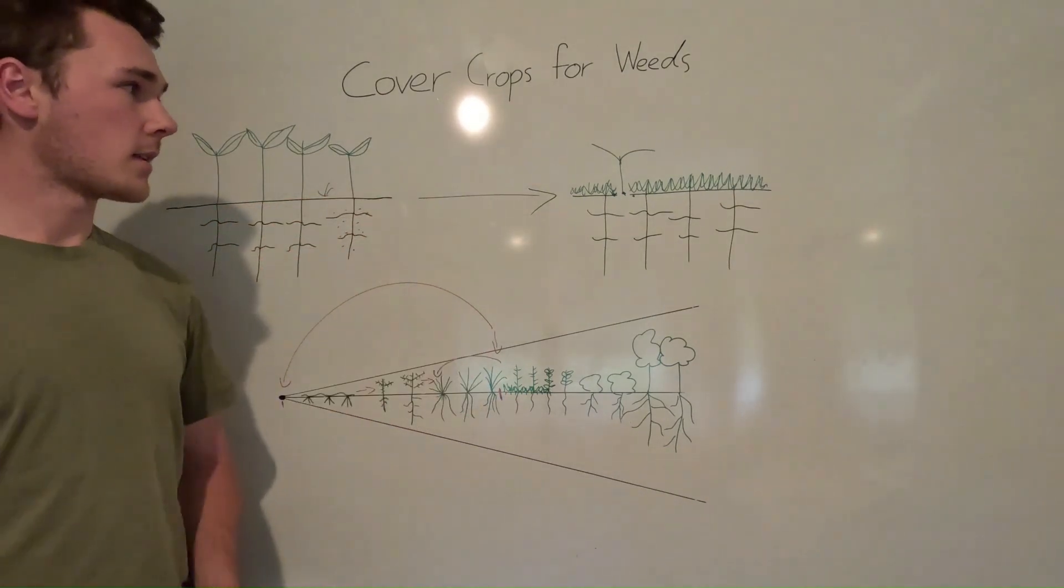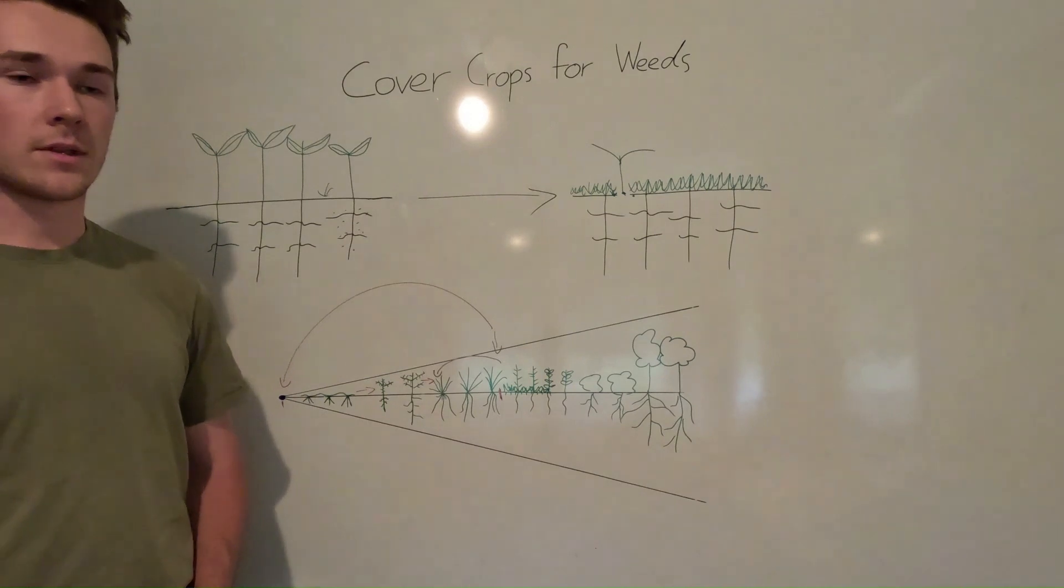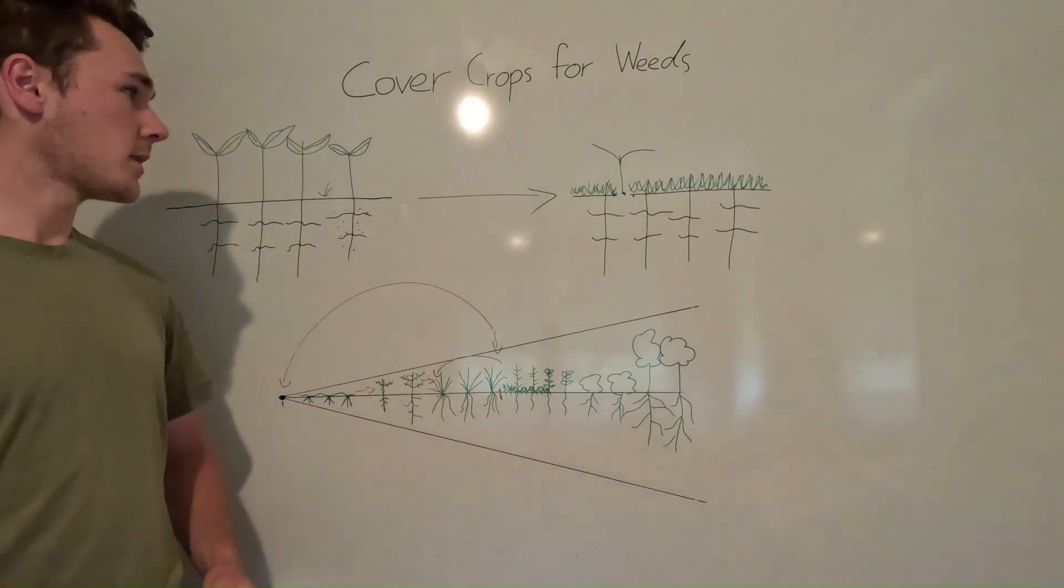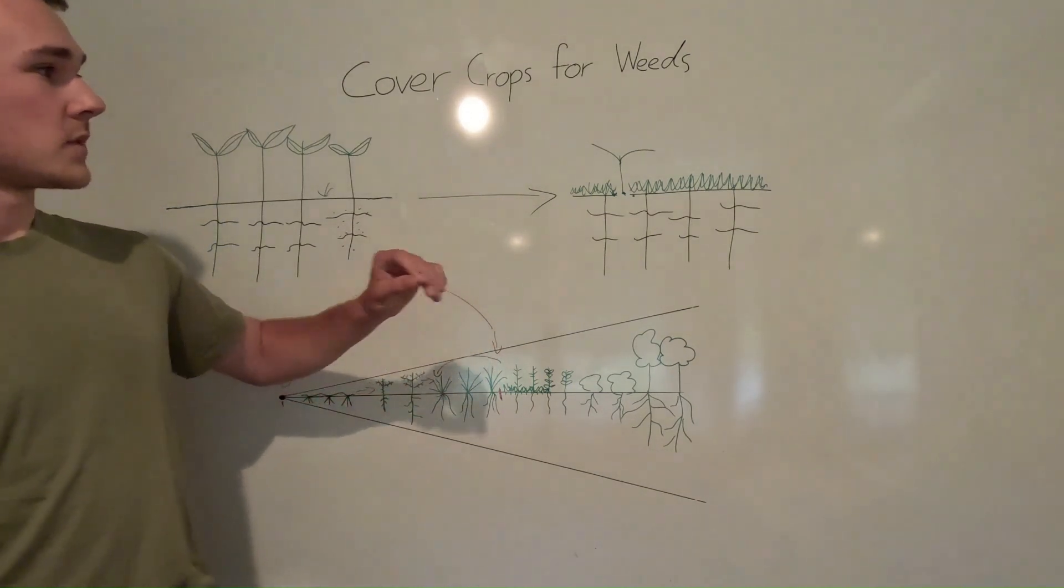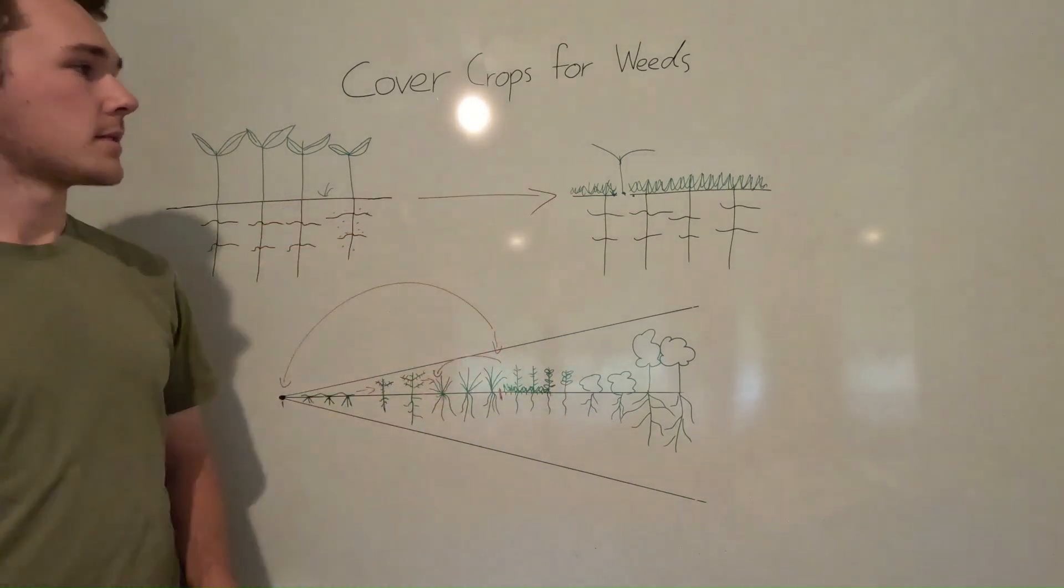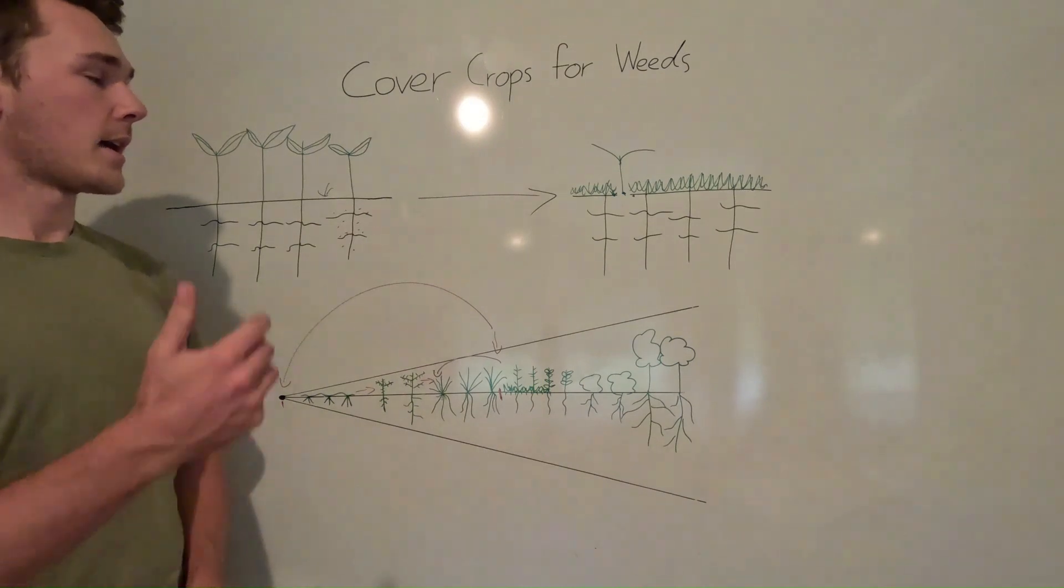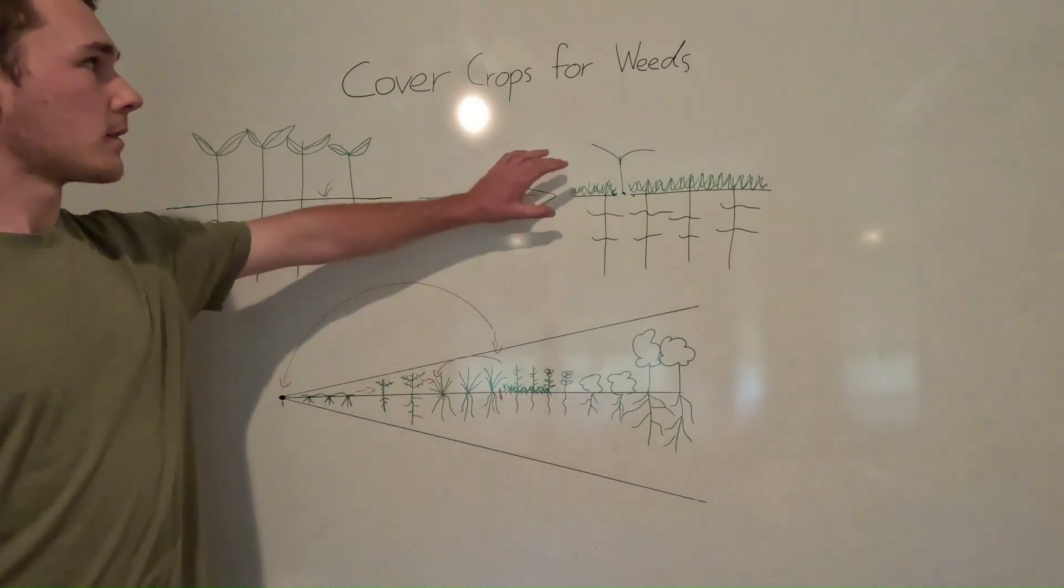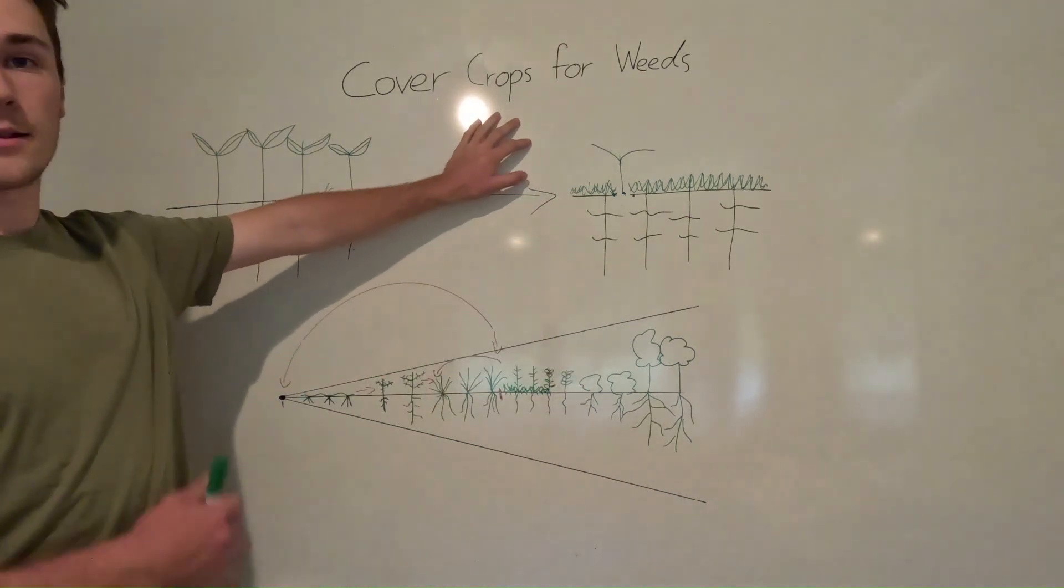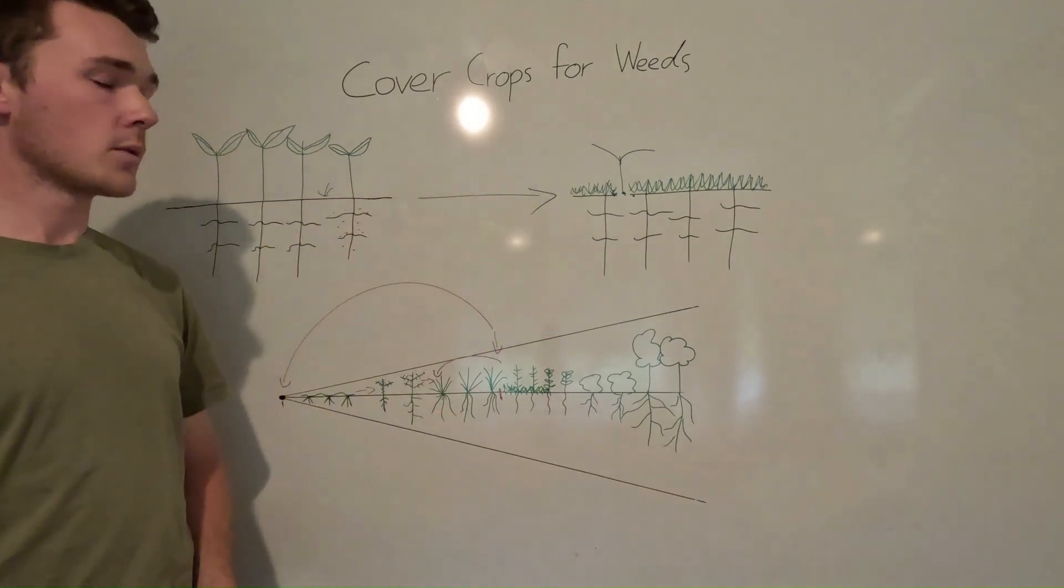And so this works really well in an organic no-till enterprise where we don't have herbicides to kill weeds. But also, if you just want to spend less money on herbicides and fertilizer as well, then using cover crops to supply that nutrition to your cash crop is a really good option to check into.